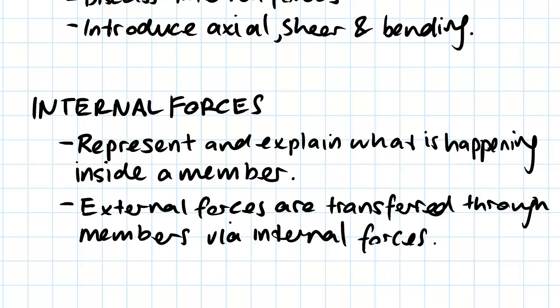So basically what happens when we build a structure or a machine or something like that is that it's made up of individual members and basically we load these members externally. So if we have a beam that looks like this,